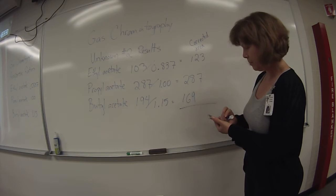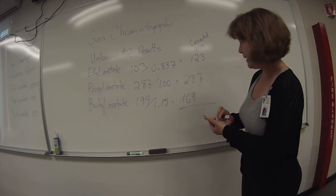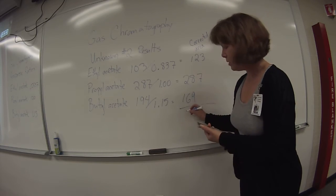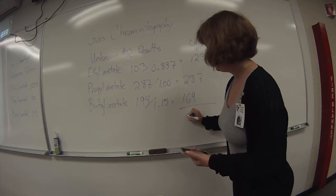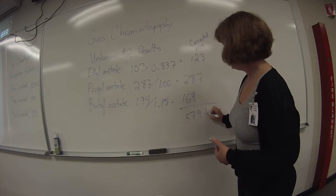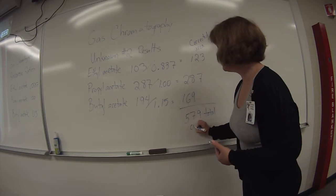So it's 169 plus 287 plus 123. So the total corrected area is 579. This is the total corrected area.